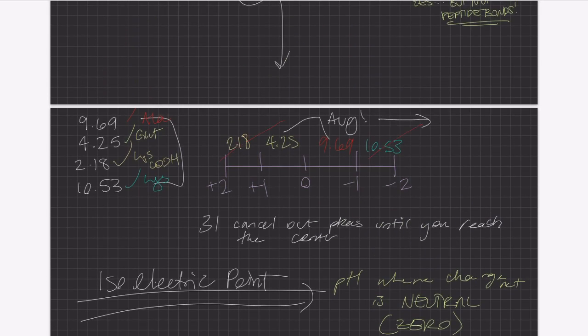By doing this, you would take the average of 4.25 and 9.69 sum divided by 2. This would leave you with 6.97. And that is exactly how you find the isoelectric point of this molecule.